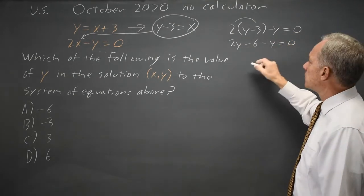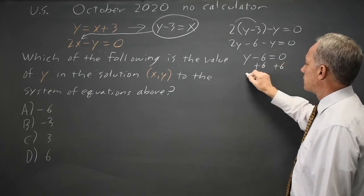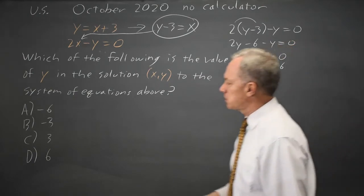Combining like terms, 2y minus y is y, y minus 6 equals 0. Add 6 to both sides, and I get y equals 6. That's choice D.